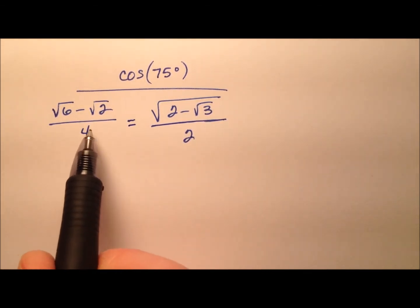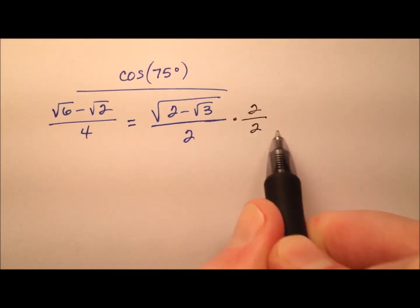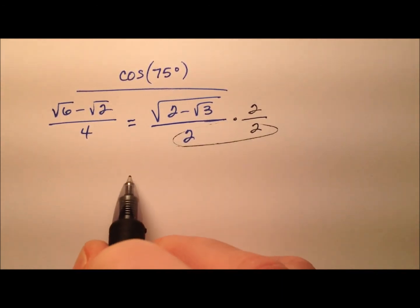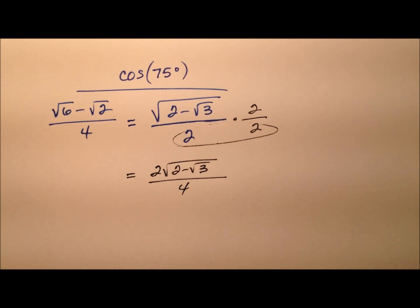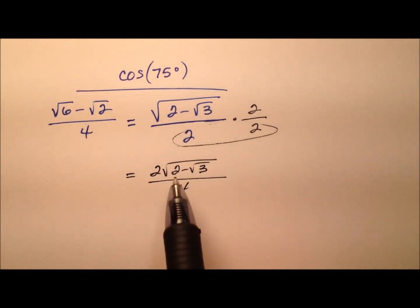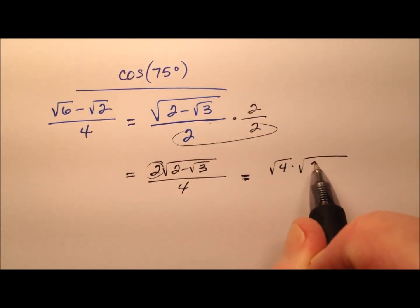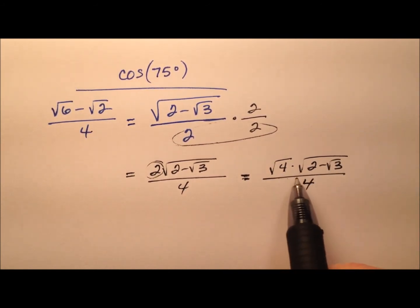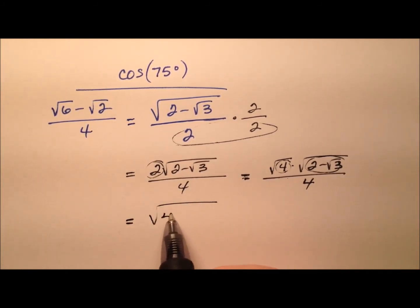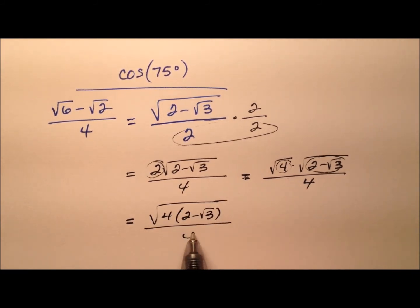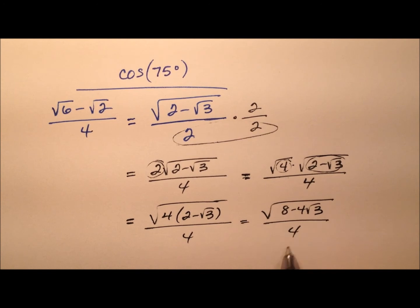First, let's look at these denominators: one is a 4 and one is a 2 — obviously not the same. So I'm going to start by multiplying the expression on the right by 2 over 2 to force these denominators to be the same. When I do that, I have 2 times that radical expression all over 4. Now this 2 can be written as the square root of 4, and I'm going to be able to multiply these two radicands together.